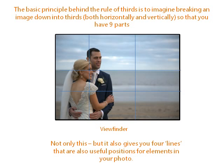We also keep the horizon away from the middle — we could put it on the top part of the line or the bottom part of the line. And if we're using a person, we place their eye line on those lines. So we see here, even though the bride and groom are pushed to the side, it still balances out the picture.